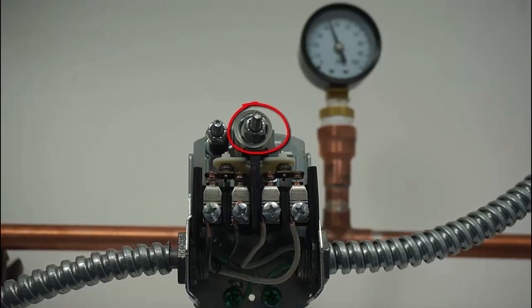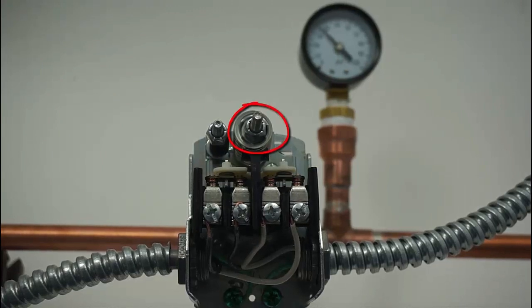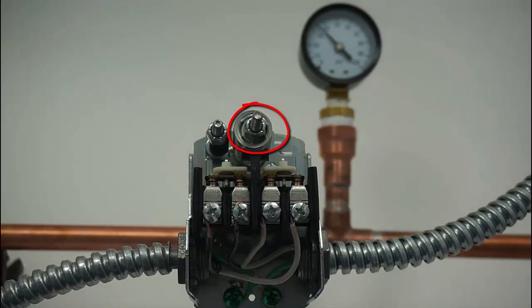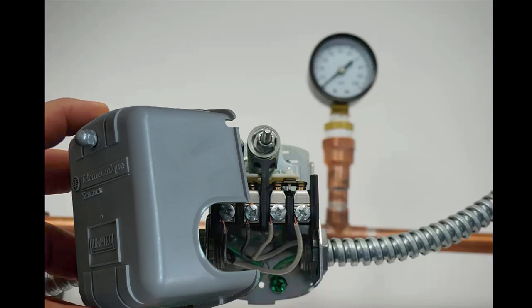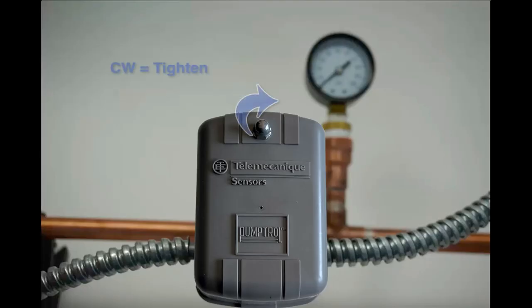You can increase the high pressure set point by adjusting the large nut clockwise. One turn increases the set point by approximately 2.5 PSI. Reinstall the cover. Hand tighten the nut by rotating it clockwise to secure the plastic cover to your 9013 FSG Pressure Switch. Your pressure switch is now ready to provide you years of trouble-free service.